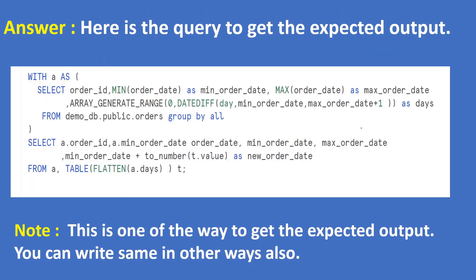The answer uses a CTE (WITH clause) to get the minimum date, maximum date, and uses the ARRAY_GENERATE_RANGE function from the FLATTEN object to calculate the date difference and get the days, with GROUP BY ALL — meaning group by order_id. Then SELECT order_id, min order_date, max order_date, and min_order_date plus the number value as new_order_date from the CTE table, flattening the number of days.